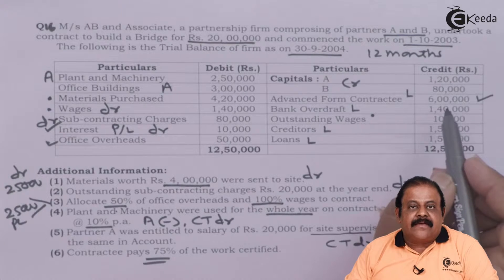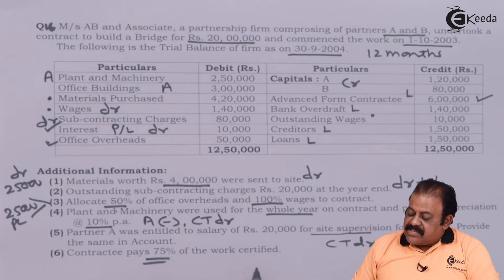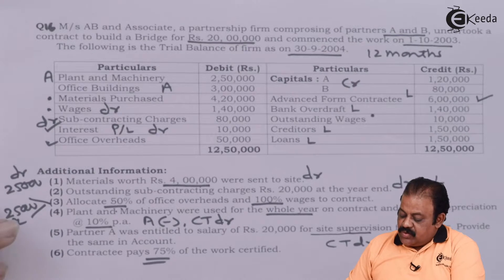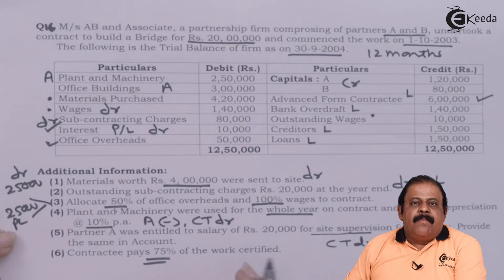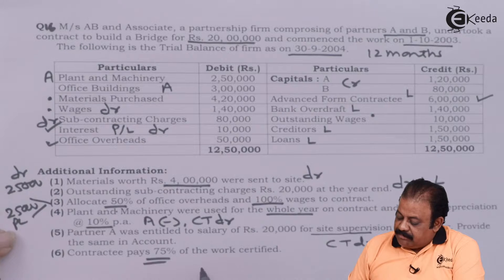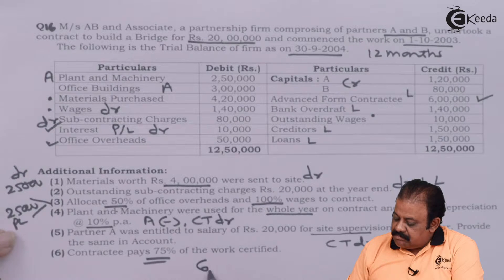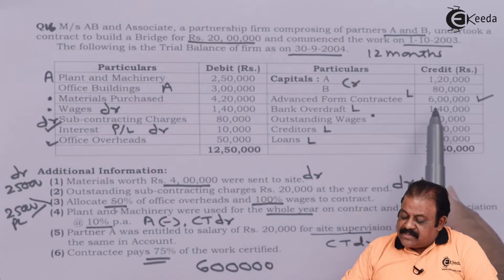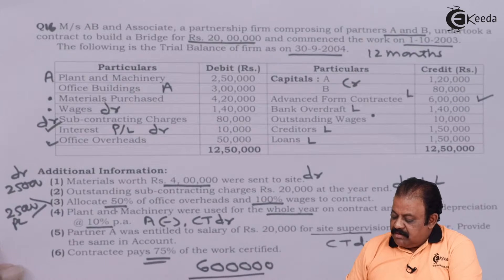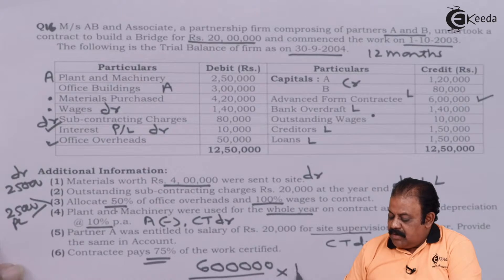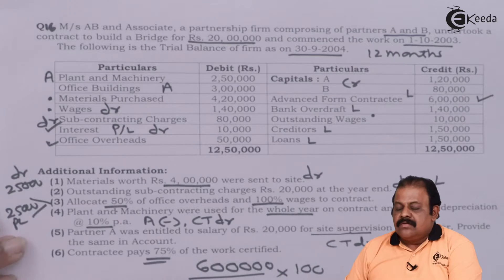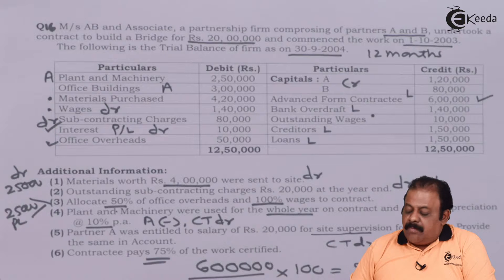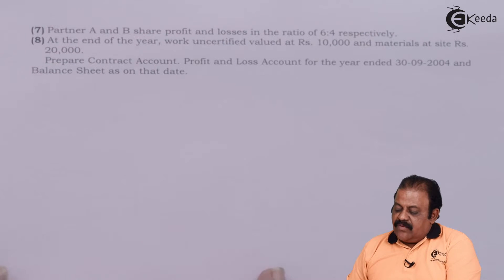The contractee pays 75 percent of work certified. The amount received from the contractee is 6 lakhs. Since it is 75 percent of work certified, we need to find the amount of work certified: cash received 6 lakhs divided by 75 percent multiplied by 100 equals rupees 8 lakhs. So the amount of work certified is rupees 8 lakhs.